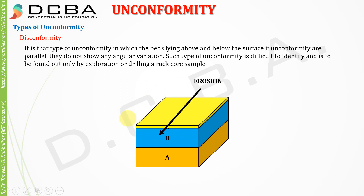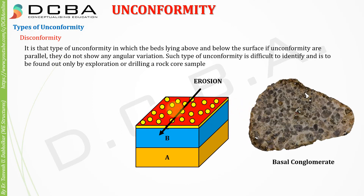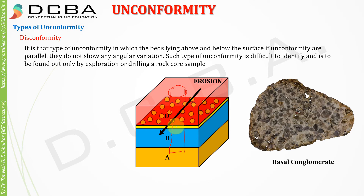In disconformity, we have a sequence A, B, C — then C gets eroded because deposition stopped. Erosion creates fine particles of the rock, which get left on top. Then layer D comes. To confirm unconformity, you drill a bore log, and at this junction you find what's called basal conglomerate — fine particles representing the eroded layer. The presence of basal conglomerate is strong evidence of unconformity.